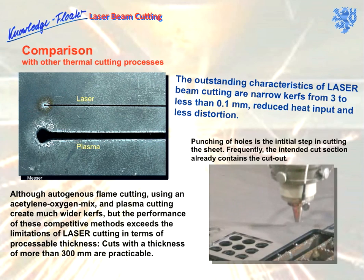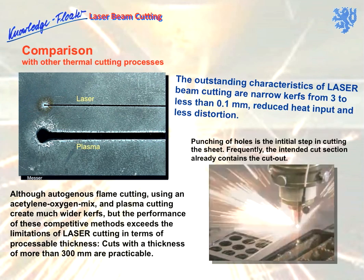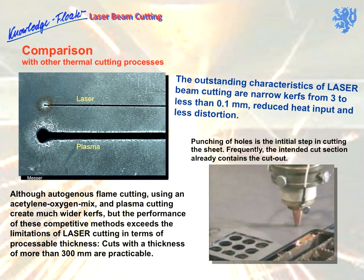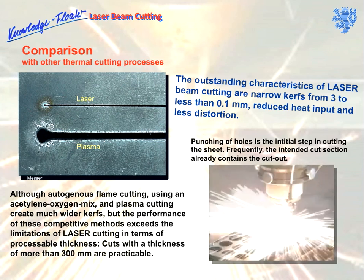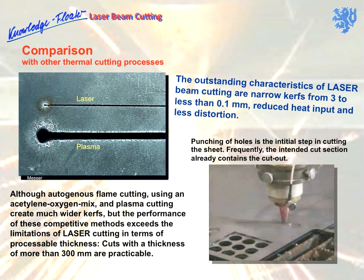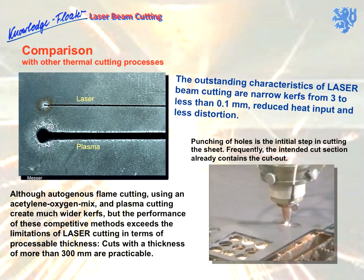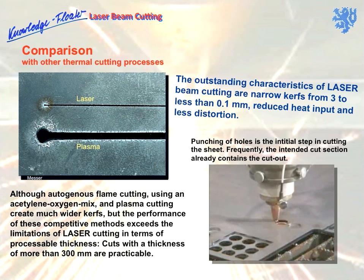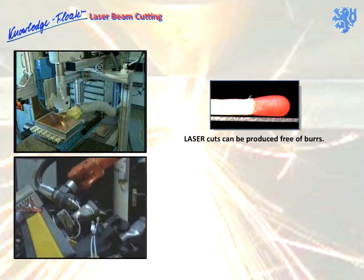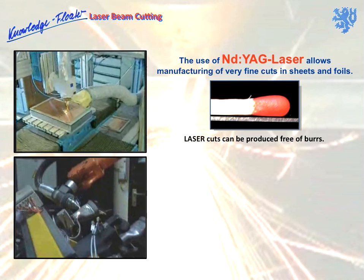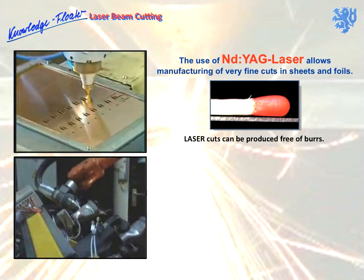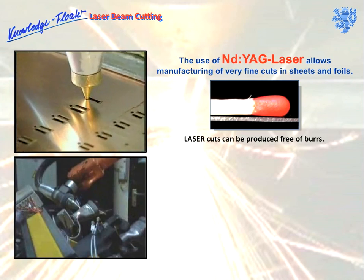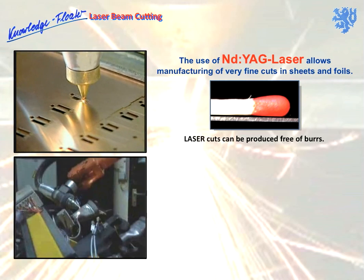Punching off holes is the initial step of cutting sheets. For the cutting tasks demonstrated so far, CO2 lasers have mainly been used.